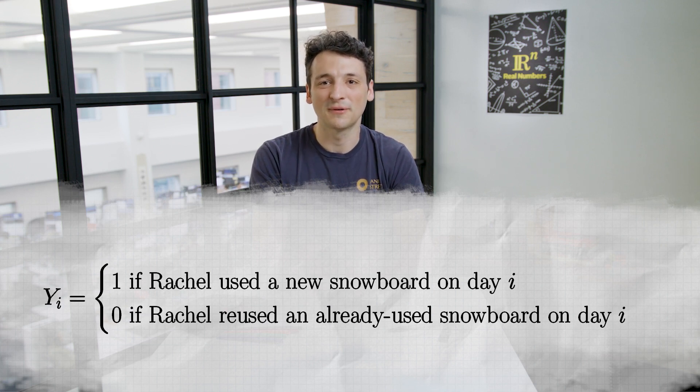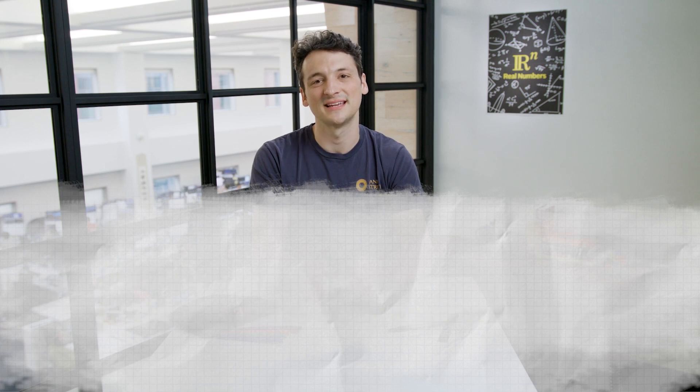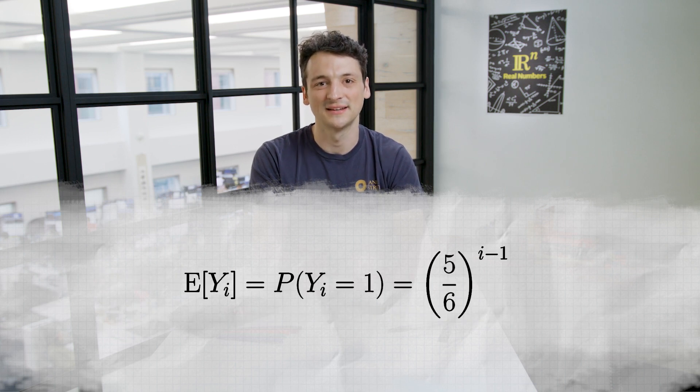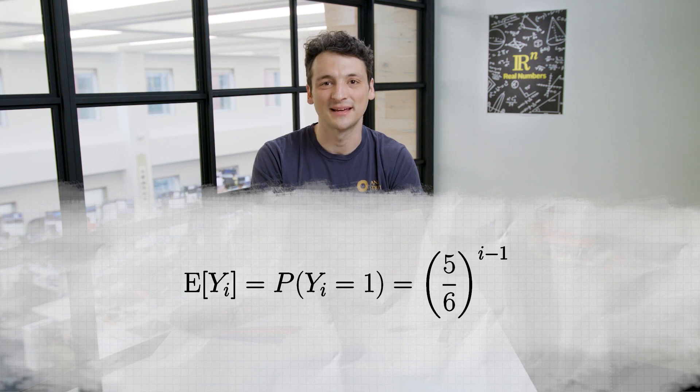Then what would be the probability y sub i equals 1? Whatever board we select, the probability that it wasn't used on any of the previous days is (5/6)^(i-1), since on each of the i minus 1 days, Rachel had a 5/6 chance of picking a different board independently. Therefore, the expected value of y sub i is (5/6)^(i-1).